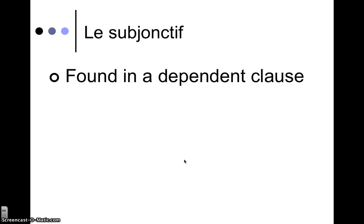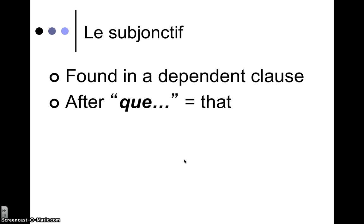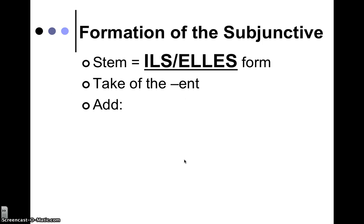The important thing about the subjunctive is it's found in a dependent clause, which means that there's an independent clause attached to it. So you're going to see this word 'que,' meaning 'that.' And your sentence is going to end up with two subjects. But let's talk about formation — that's the main focus for us right now, figuring out how do we make the subjunctive.